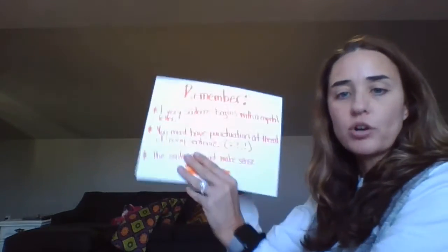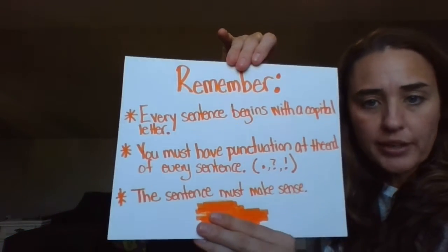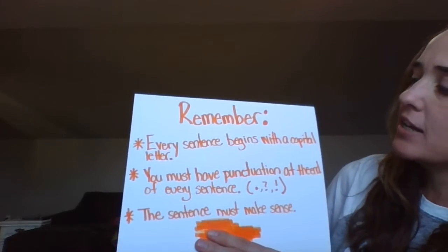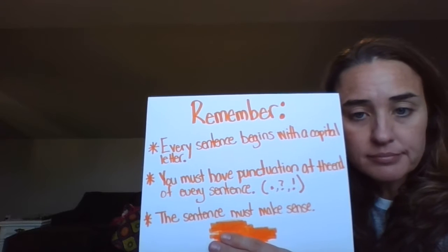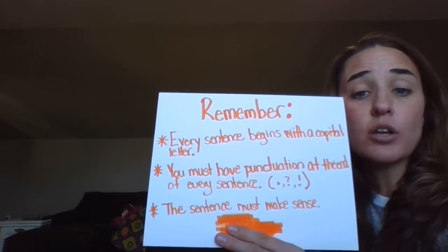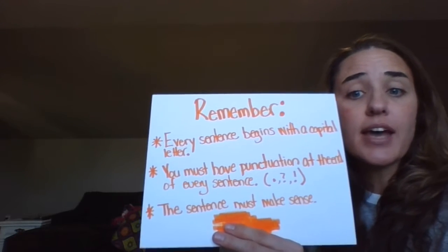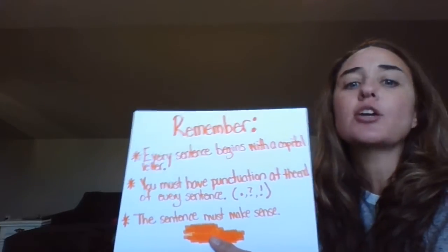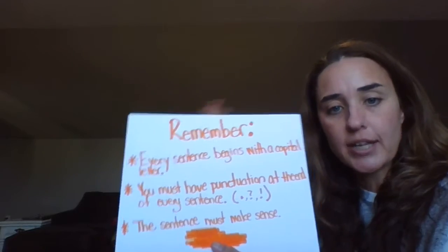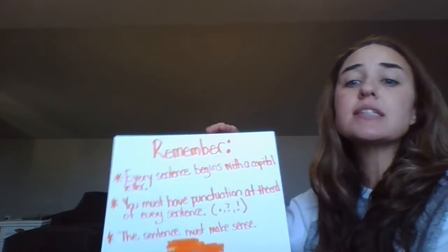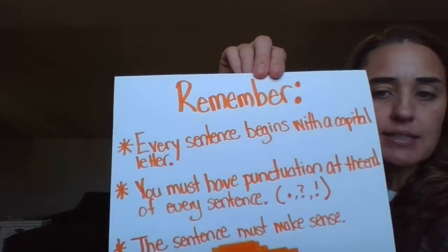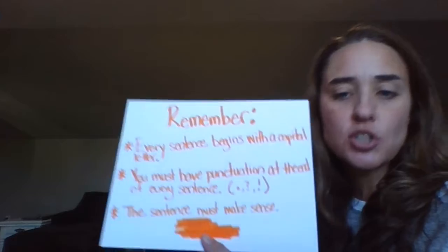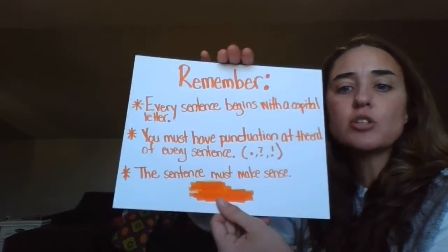Now I want you to remember these important things when you go to write your story. Every sentence begins with a capital letter. You must have punctuation at the end of a sentence — that's your period, your question mark, or your exclamation point. And your sentence must make sense; it needs to have a subject and tell what the subject is doing. These are important points to remember when you're writing your story.